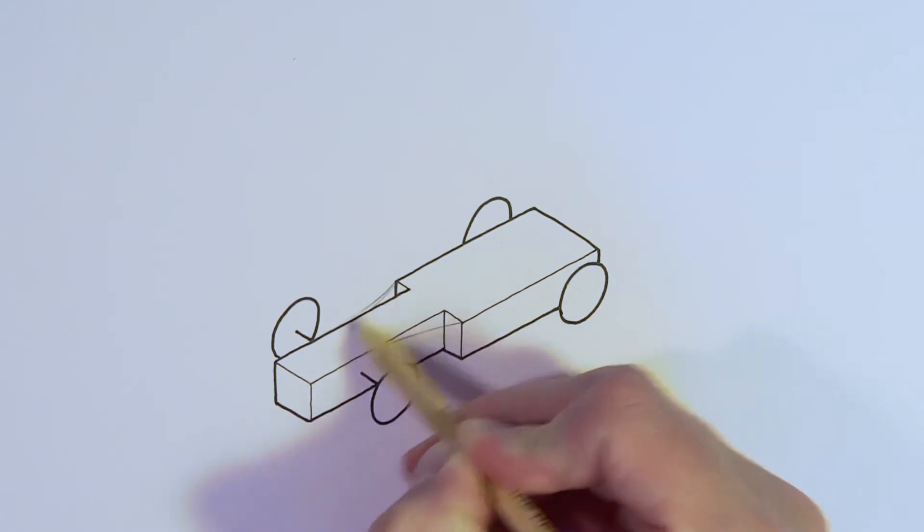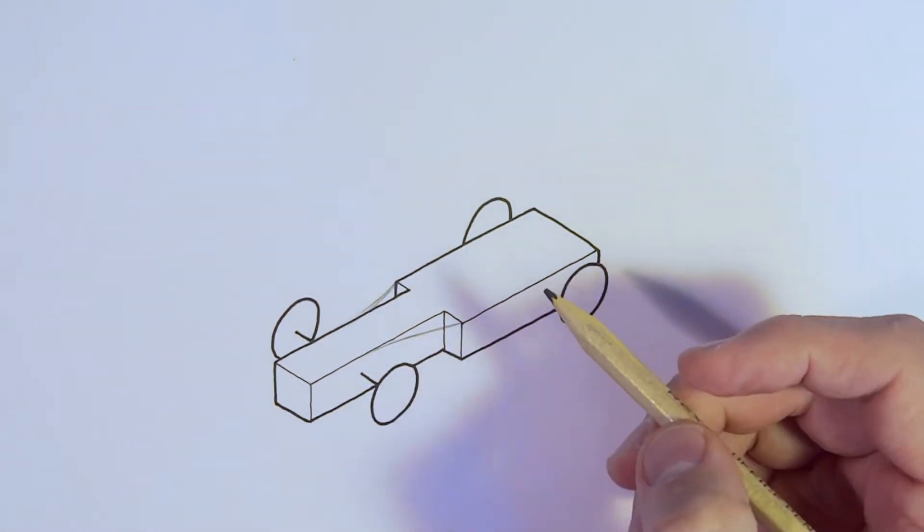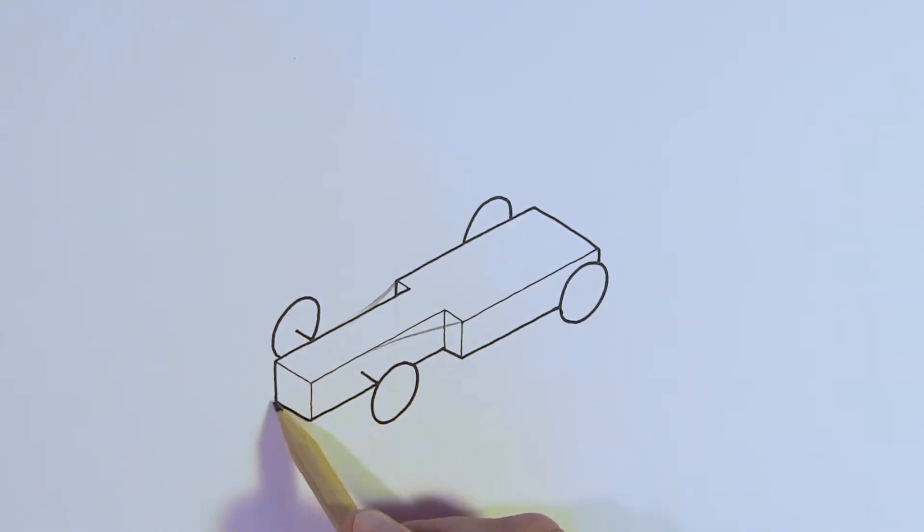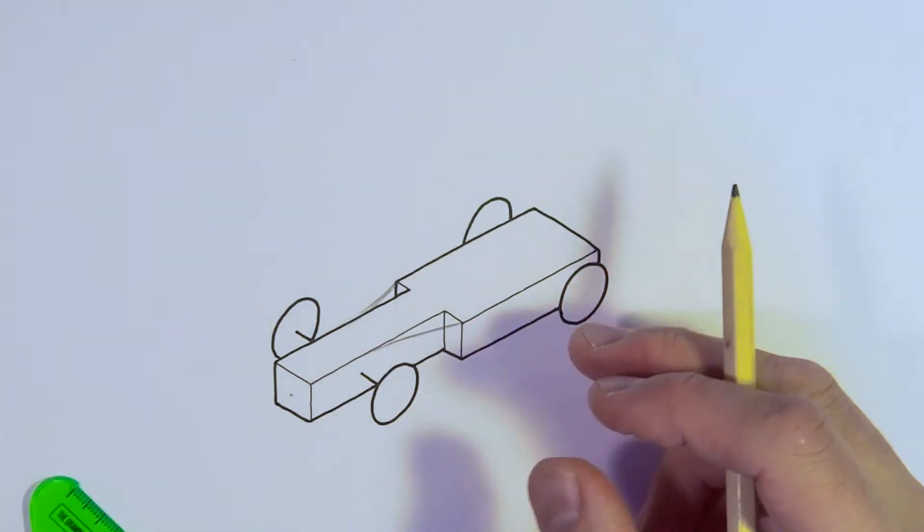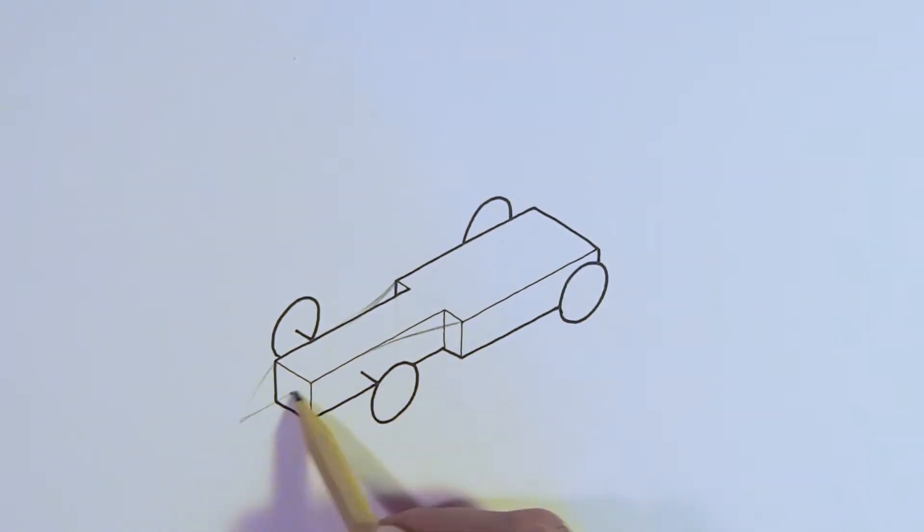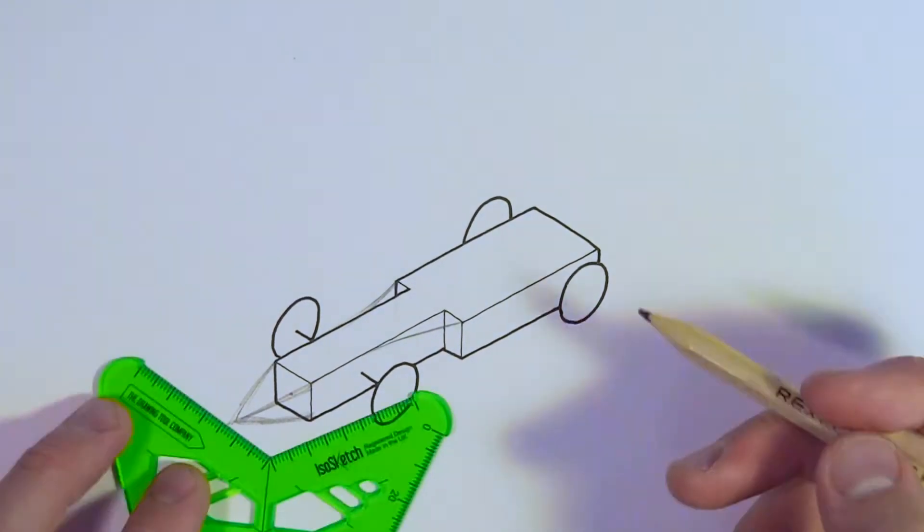So you've already sketched the chassis and all we're going to do now is take a pencil to it. We've just sped the film up so we're not spending too long, but really just using ISO sketch to help us get the geometry and lines in parallel so the drawing looks right. We're starting to draw features onto the chassis, putting a little bit of a nose cone on.